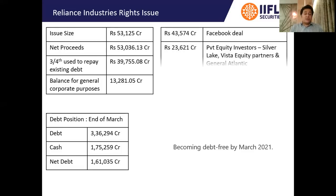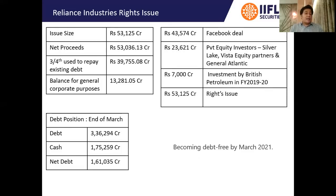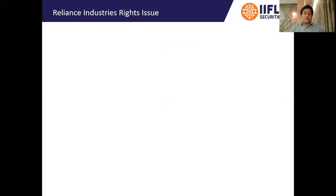That is why they have gone into a spree of fundraising activity recently, mainly by selling minority stakes. They sold minority stakes in Jio-related platforms to Facebook, raising Rs.43,000 crores. Another Rs.23,000 crores was raised by selling stakes to private equity investors, Rs.7,000 crores through investment by British Petroleum. This rights issue is expected to give them around Rs.53,000 crores, essentially helping Reliance become debt-free by March 2021.